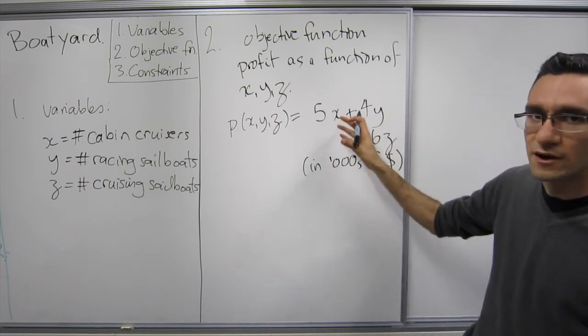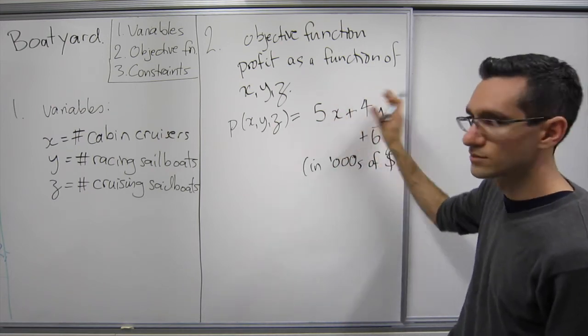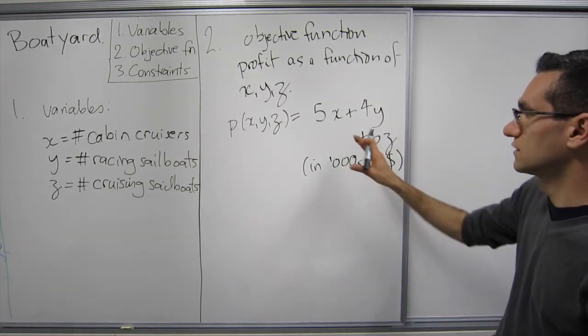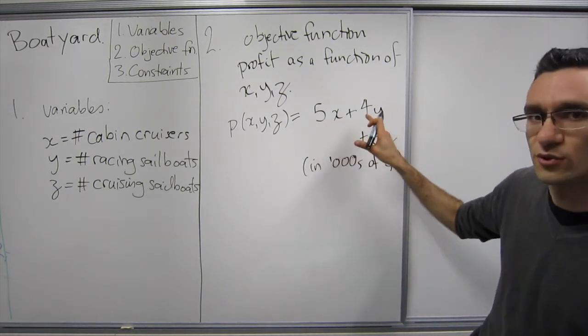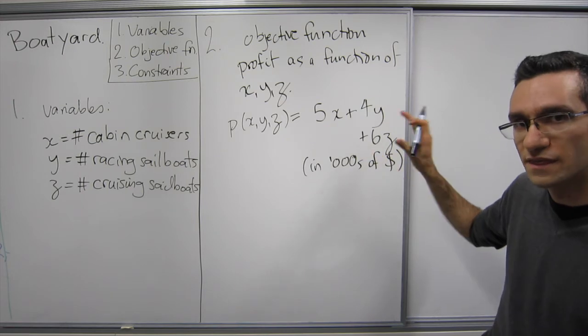thousands of dollars. So it's just a matter of keeping things simple and not cluttering up with too many zeros. If you want to write this as 5,000X plus 4,000Y plus 6,000Z that's perfectly okay.